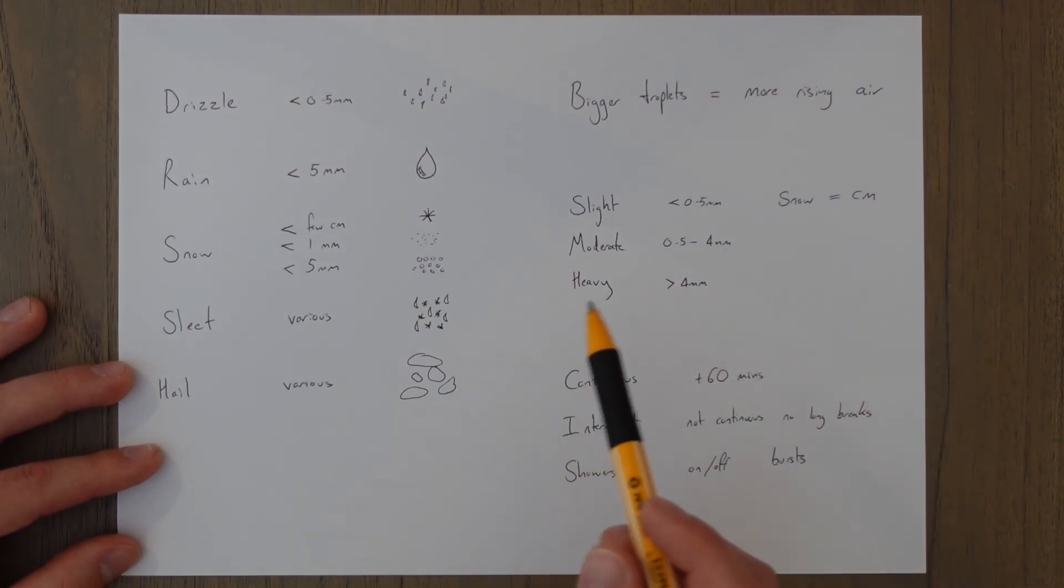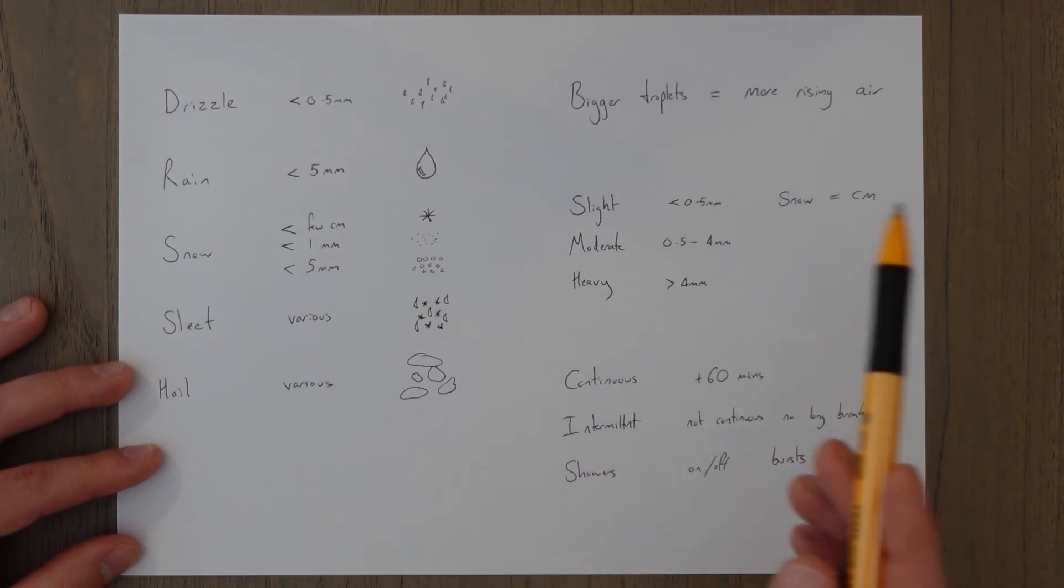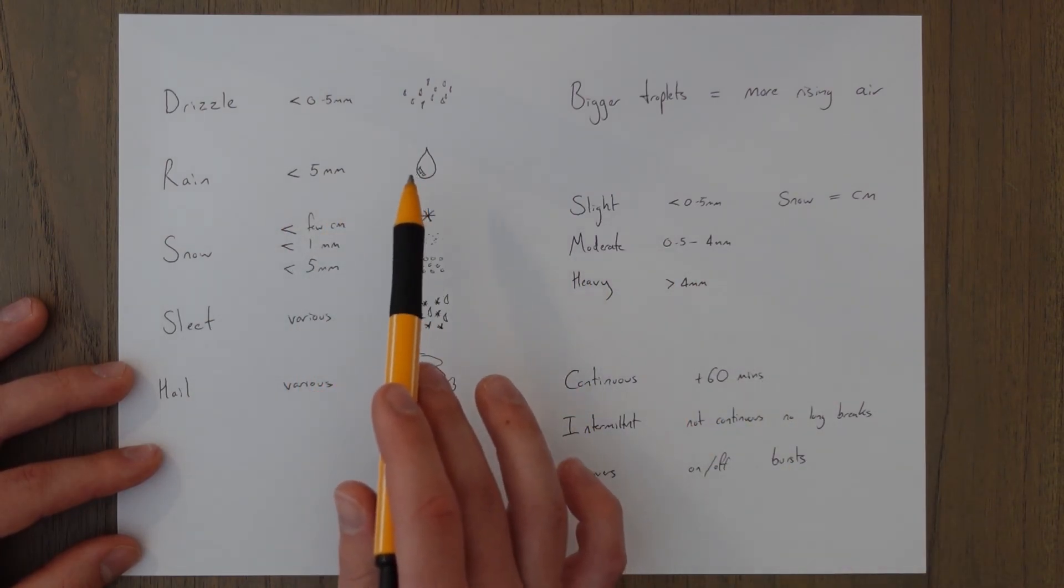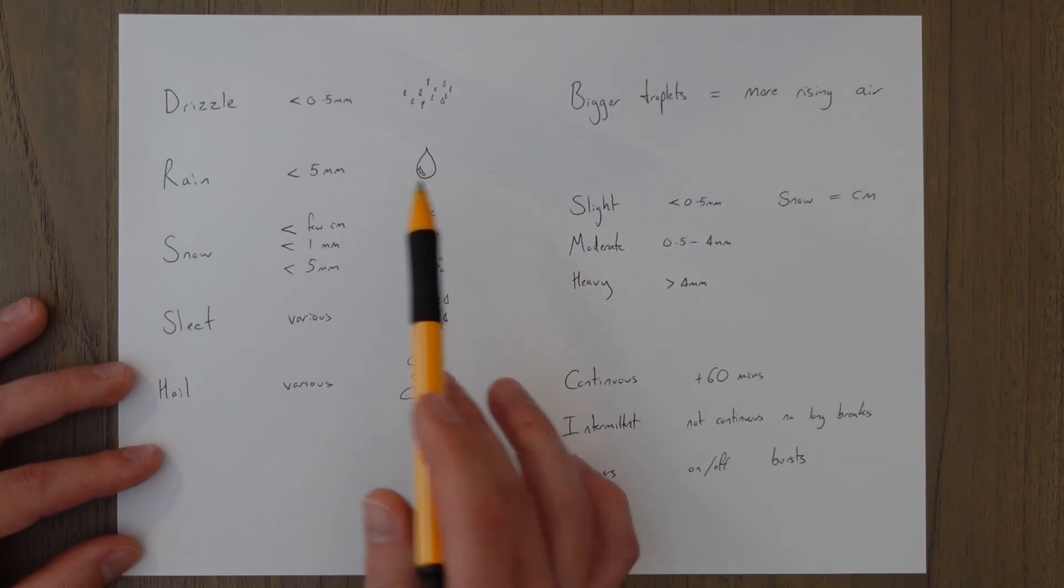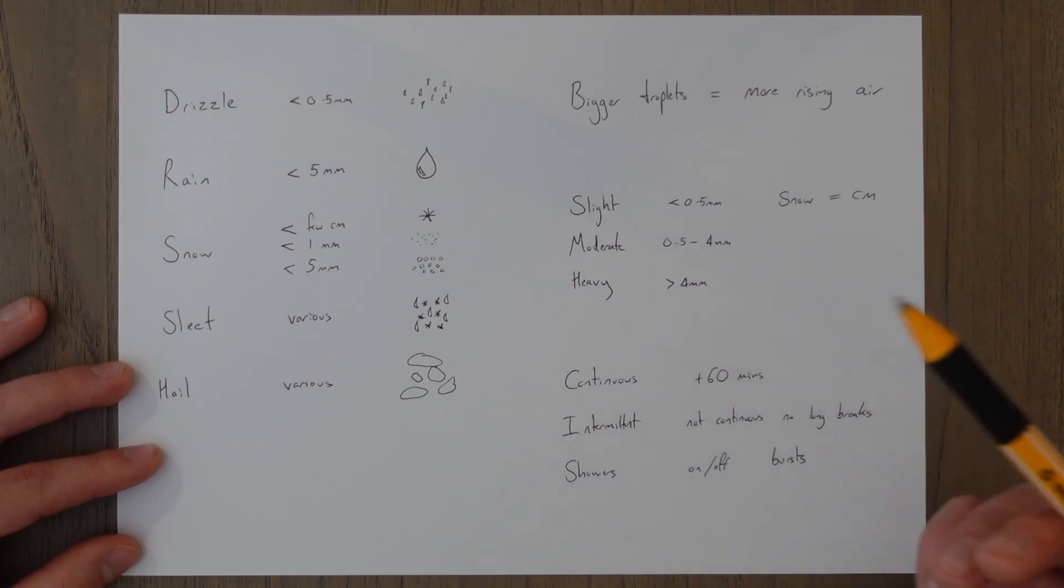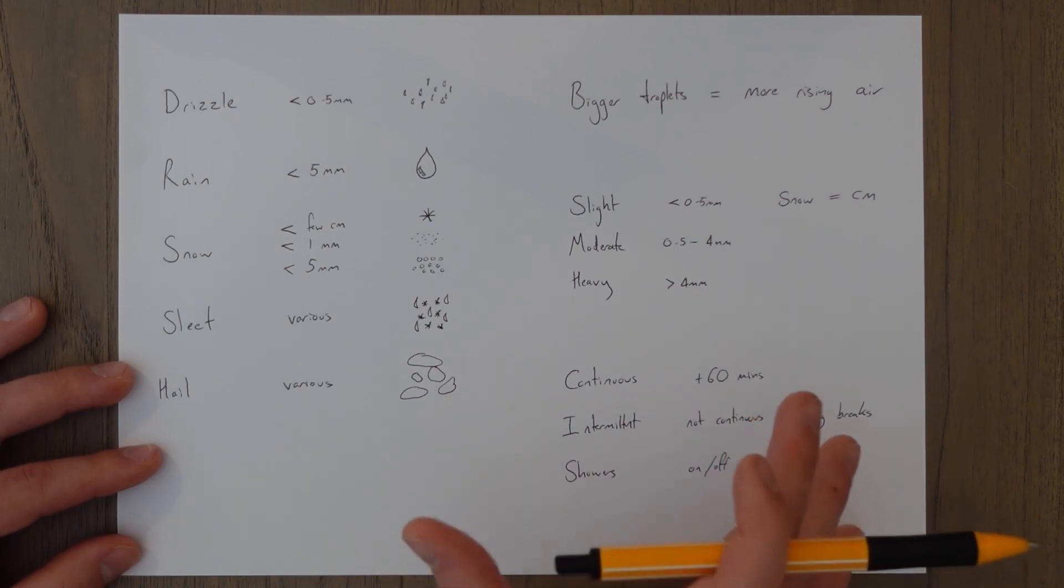And showers are defined on off blocks of precipitation. So if you had a moderate rain shower you would say that there's five millimeter sized droplets. There was 0.5 to 4 millimeters depth of them after an hour. And it was on off throughout that whole hour. There wasn't a single period where it was raining the whole hour. It was on, off, on, off.